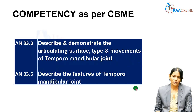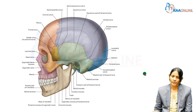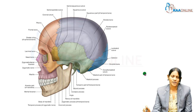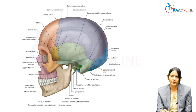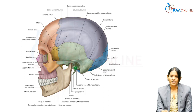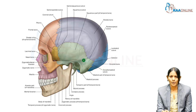Before we go into the joint per se, we will just see the topography of the bones which are associated there. The skull is depicted along with the mandibular part of the skull. This green shaded portion is the temporal bone — the squamous part of the temporal bone. Here is the zygomatic process of the temporal bone, the tympanic plate, the styloid process, and the mastoid process. All that is shaded in green denotes the temporal bone.